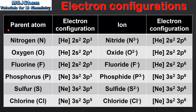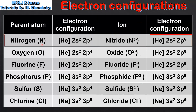Next we look at negative ions. We'll start with Nitrogen which has the electron configuration He2s2, 2p3. The nitrogen atom gains 3 electrons to form the nitride ion which has a 3- charge. The electron configuration is He2s2, 2p6.